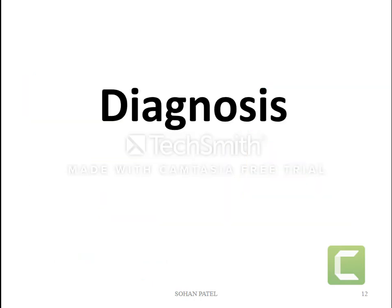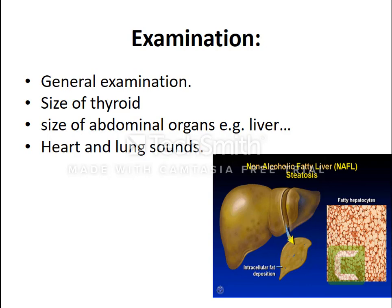Next is diagnosis. Physical examination is the best method for diagnosis of obesity. General examination of our body by doctors — size of thyroid, size of abnormal organs like the liver, and heart and lung sounds — are the basic diagnostic parameters for obesity.